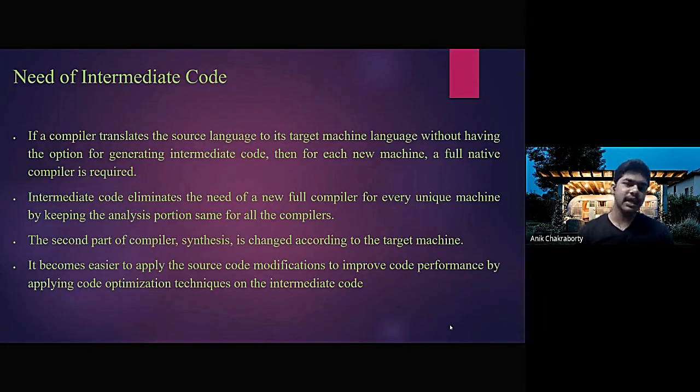Why do we exactly need an intermediate code? If a compiler translates the source language to its target machine language without having the option for generating an intermediate code, then for each new machine, a full native compiler is required.